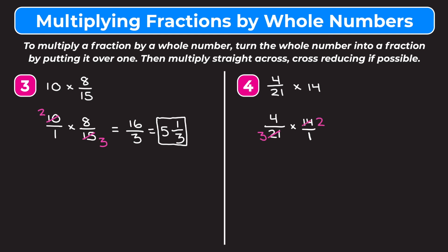Multiplying straight across: four times two gives us eight in the numerator, and three times one gives us three in the denominator. We change eight-thirds into a mixed number: three goes into eight twice, three times two is six, so we have a remainder of two. Our answer is two and two-thirds.